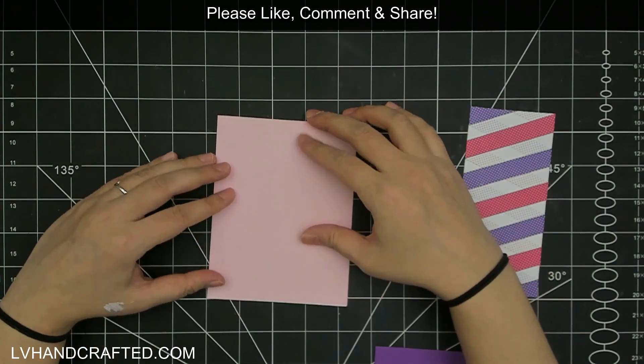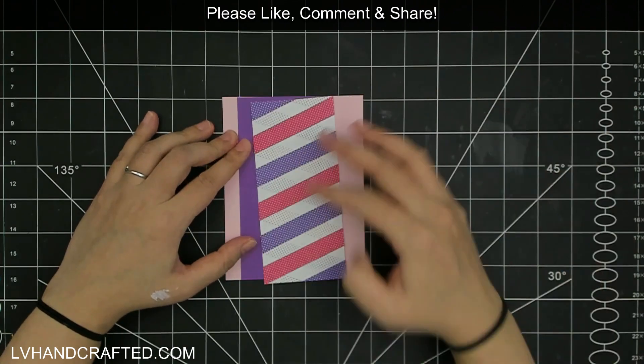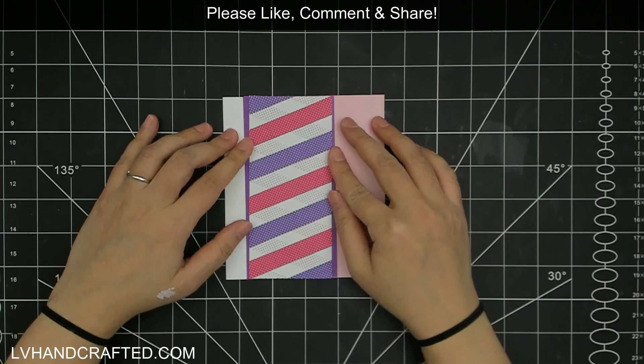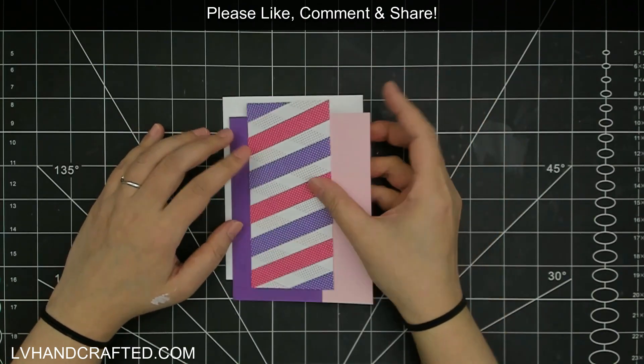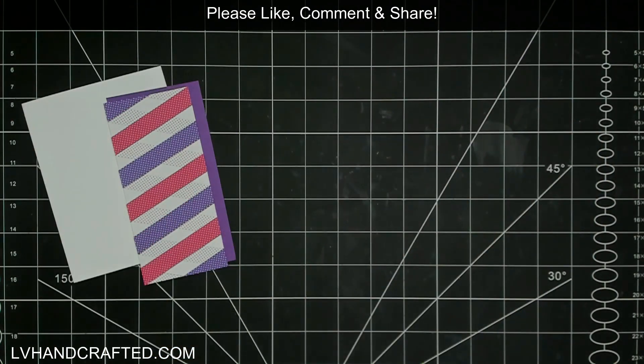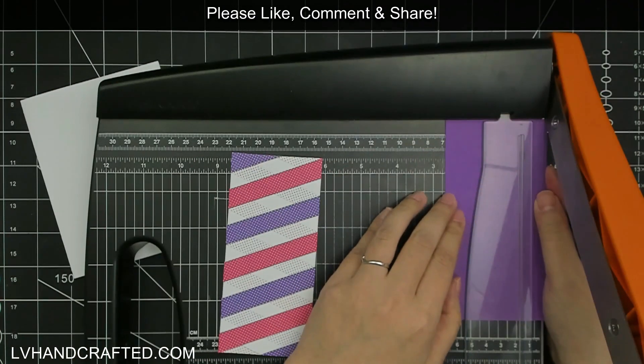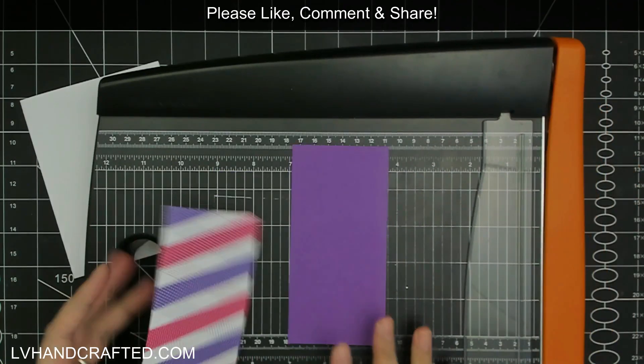So here I have my card base which is a standard 4 1/4 by 5 1/2, and I've got some really light pink cardstock that I've cut to the full size. And then I've got some purple cardstock that I've cut to just a bit wider than my twisted ribbon panel so that I have a border.